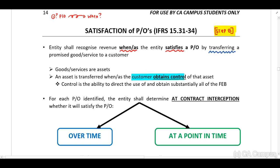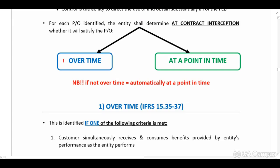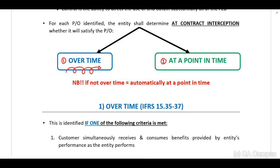To distinguish whether control has been transferred, we identify who will receive the future economic benefits from that asset. If our customer receives those future economic benefits, the customer has control. This can happen either over time or at a point in time. In our basic class example, the handset would be at a point in time, while ongoing services would be over time. You always identify first whether it is over time; if not, it will be at a point in time.